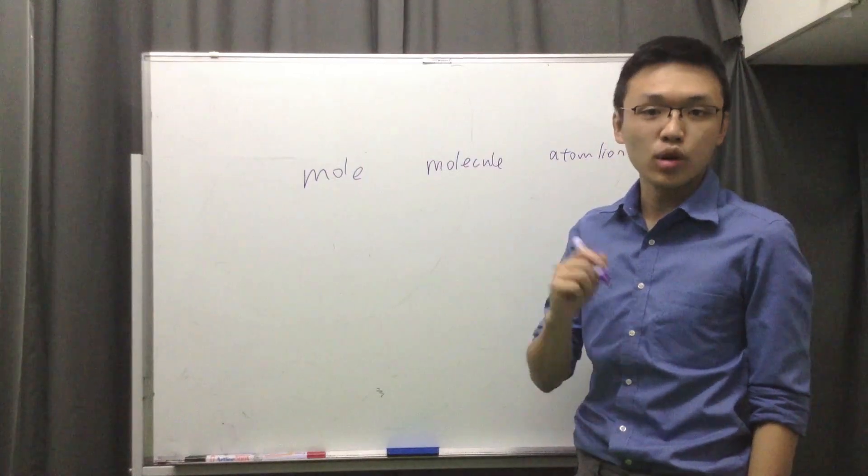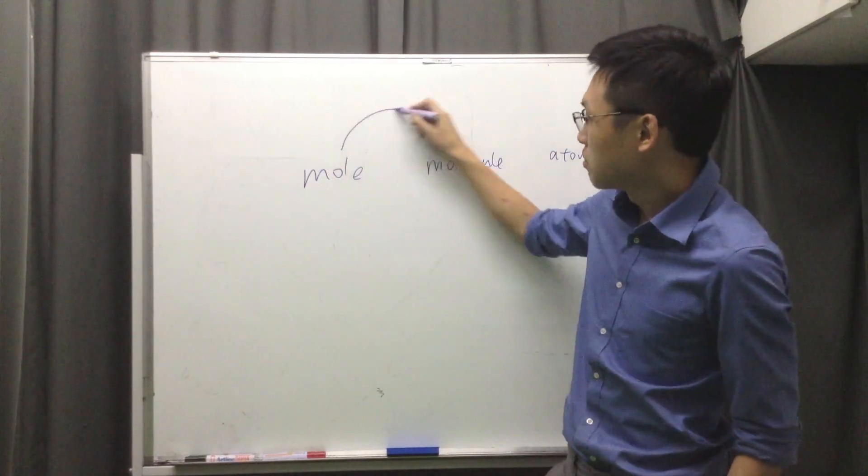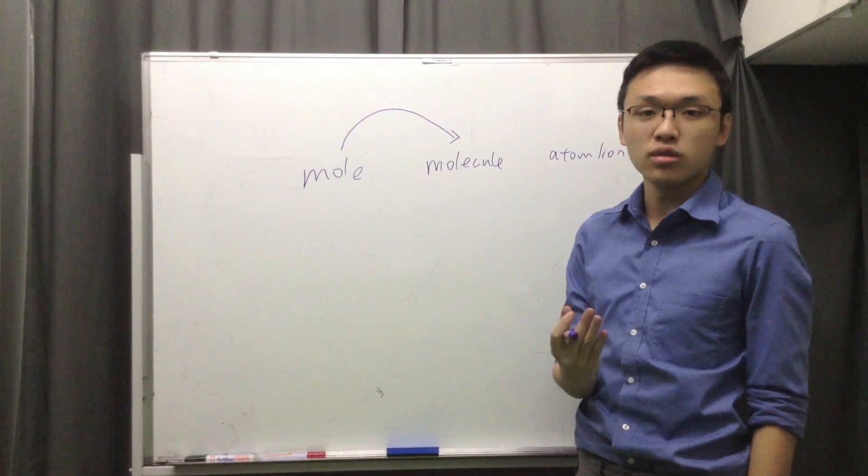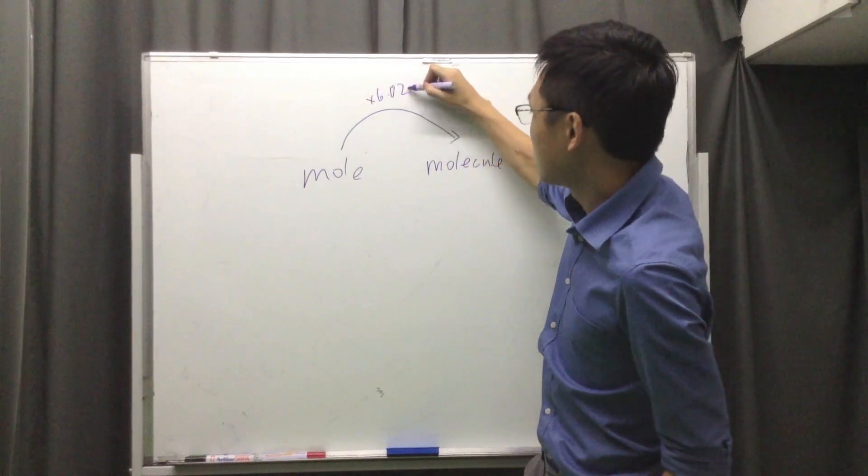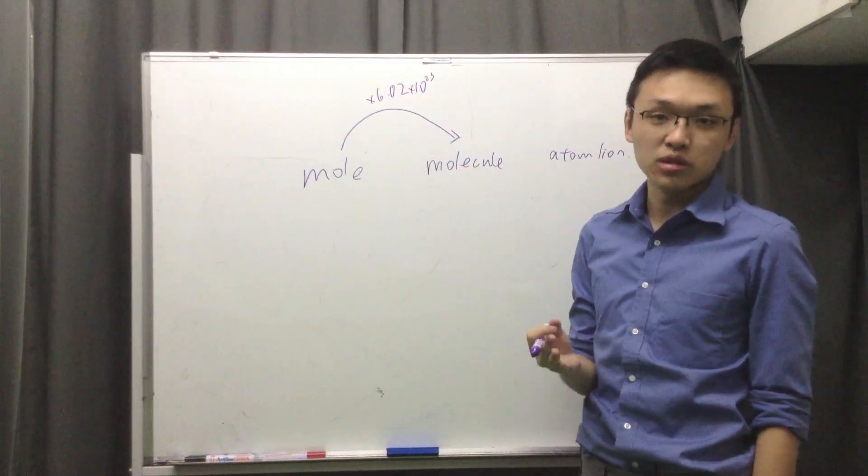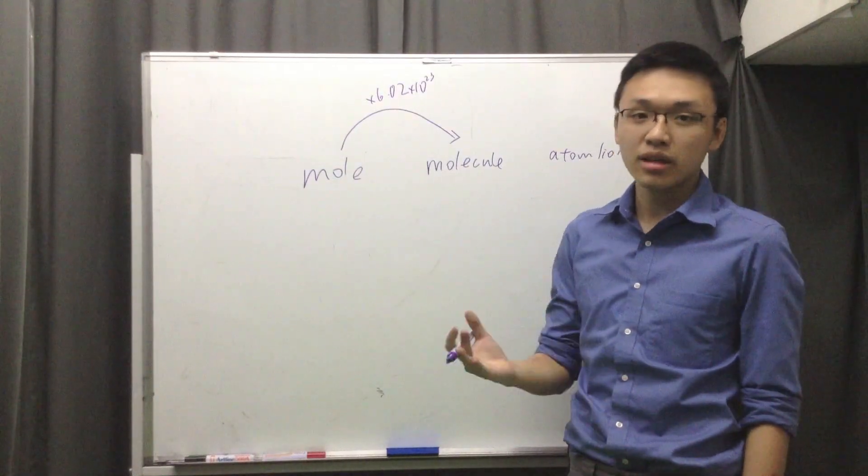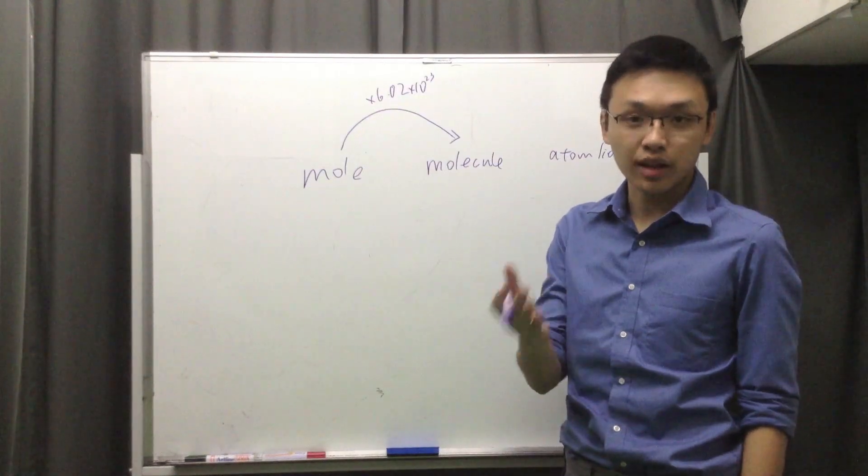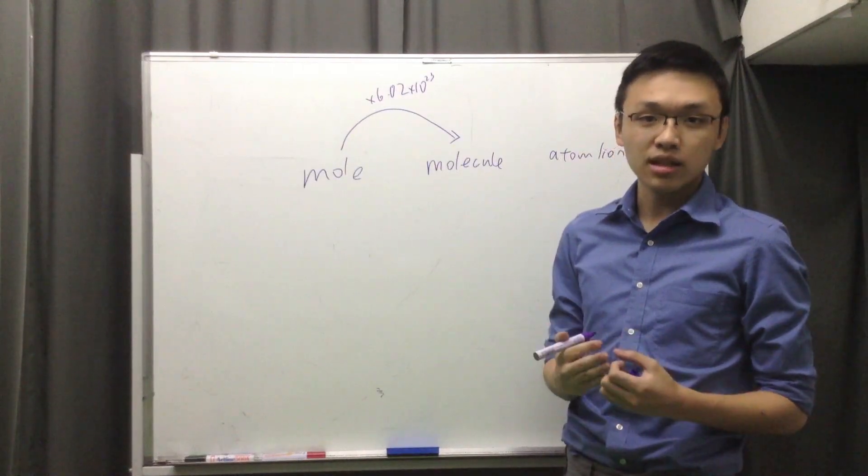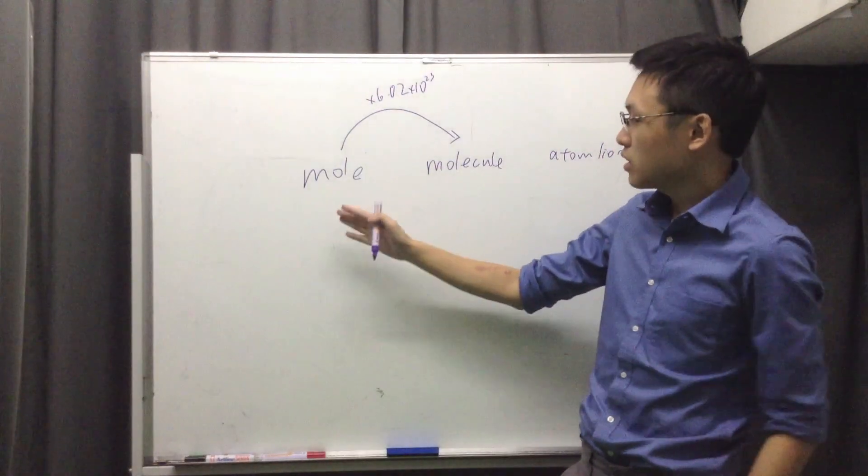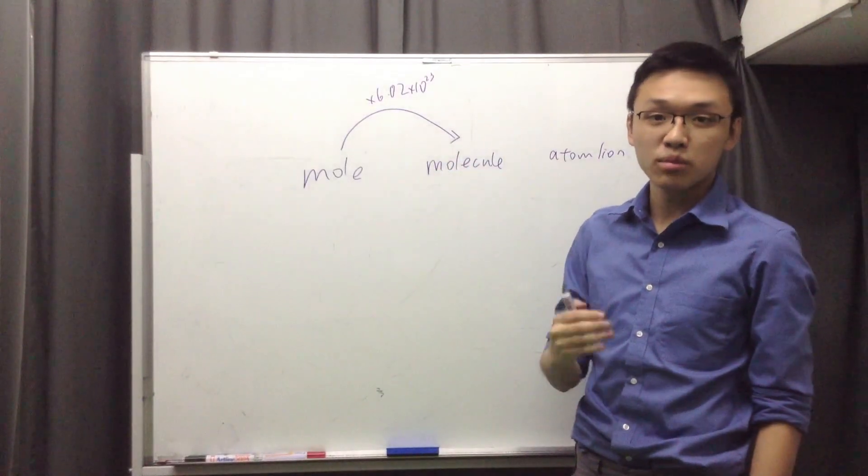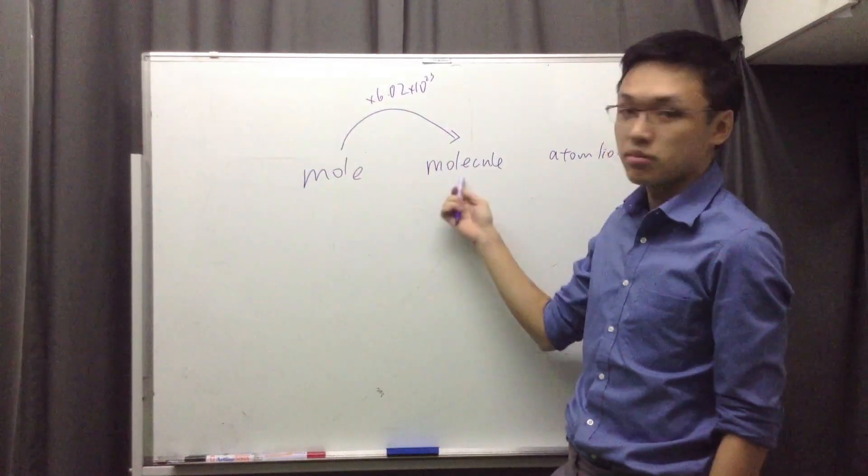A mole of anything is 6.02 times 10 to the 23rd. Therefore, when you go from mole to molecule, that means if I ask you, how many molecules are there in two moles, what should you do? You should multiply by 6.02 times 10 to the 23rd, right? It's just like saying, there are three baskets of oranges. In each basket, there are 60 oranges. So how many oranges are there in total? Just like that. So you multiply the number of oranges in each basket by the number of baskets, just like what we're doing here. If you want to go from mole to molecules, you multiply 6.02 times 10 to the 23rd by the number of moles there are, and you'll get the number of molecules.